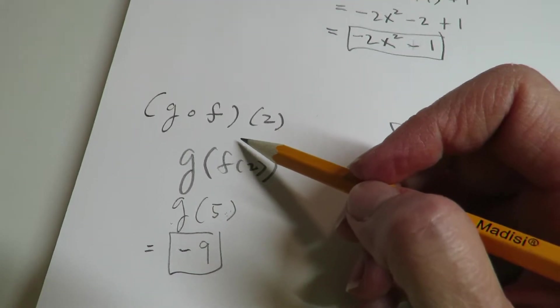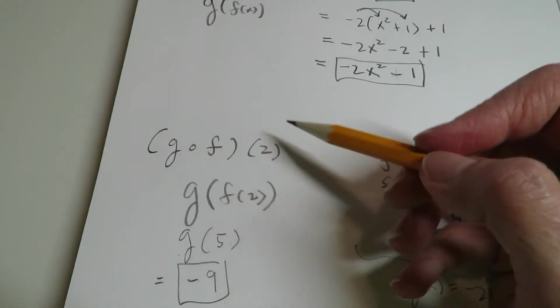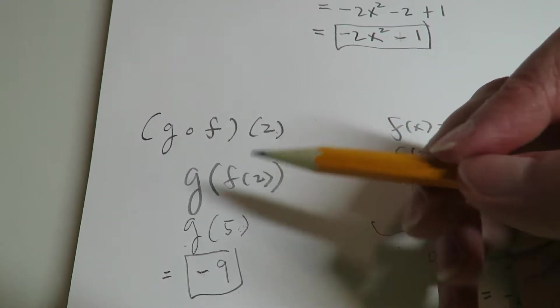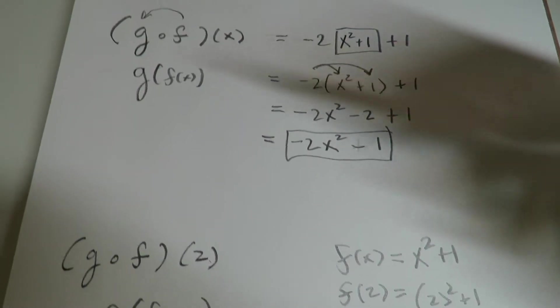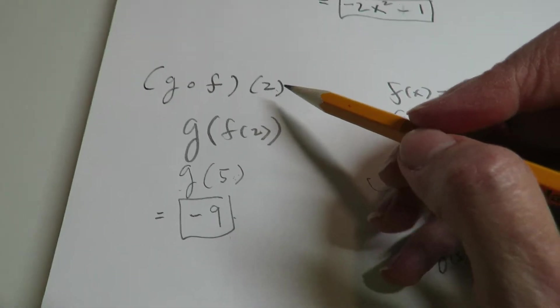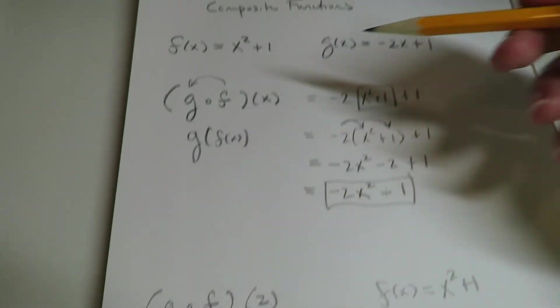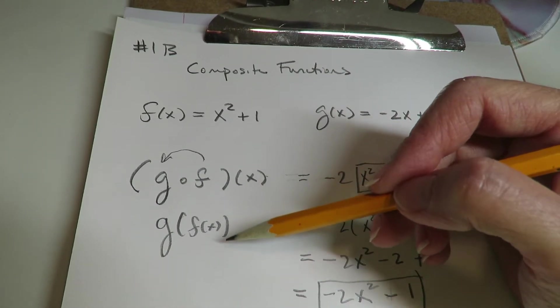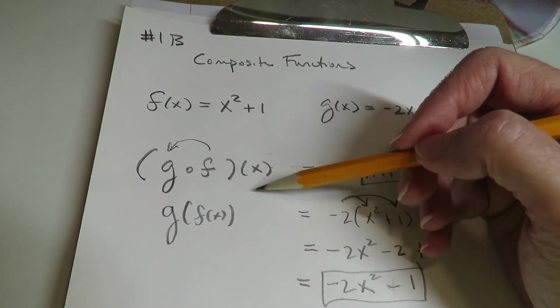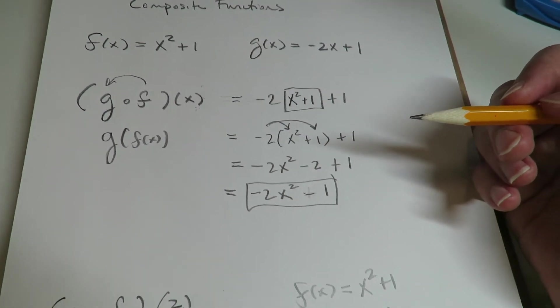Okay, so G composite F of 2 is negative 9. So remember, when you put a specific value in, you're going to get a specific value out. Let me just say that one more time, make sure you got it. When you put a specific value in, you're going to get a specific value out. If you put a variable or an expression inside of the composite, you're going to get out something that is an expression.